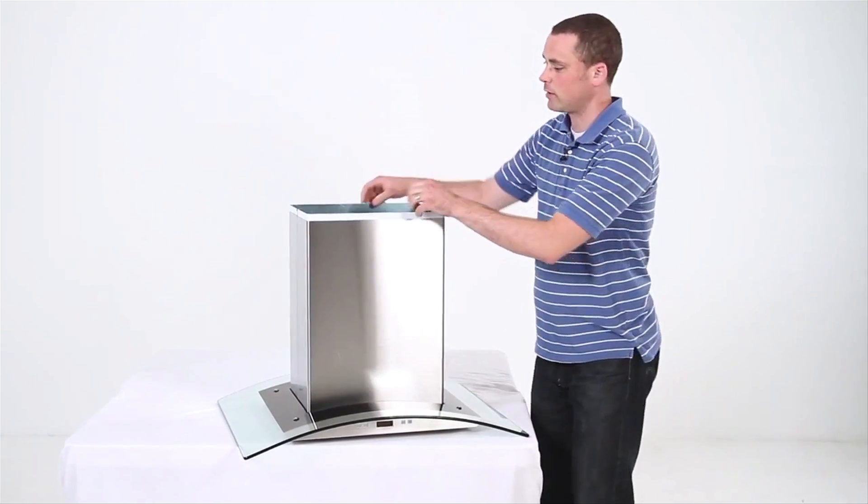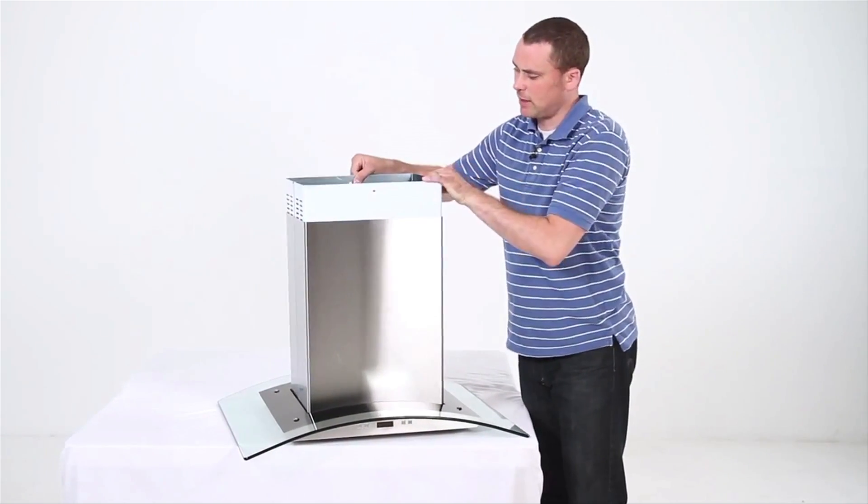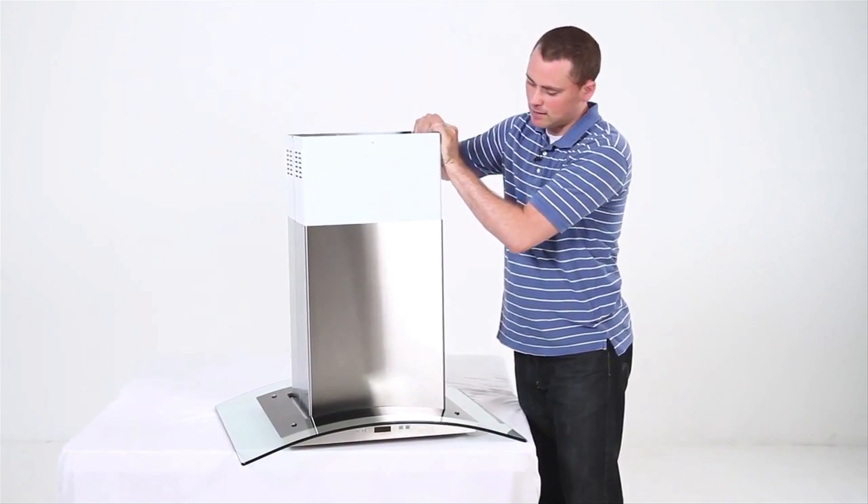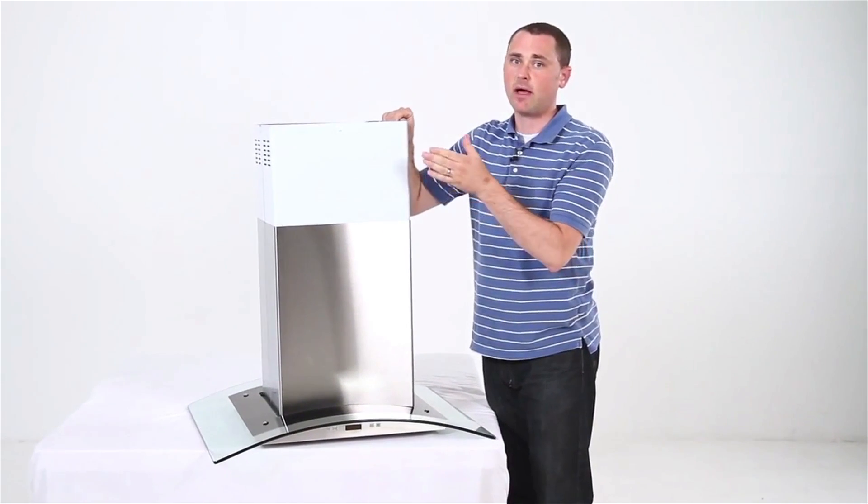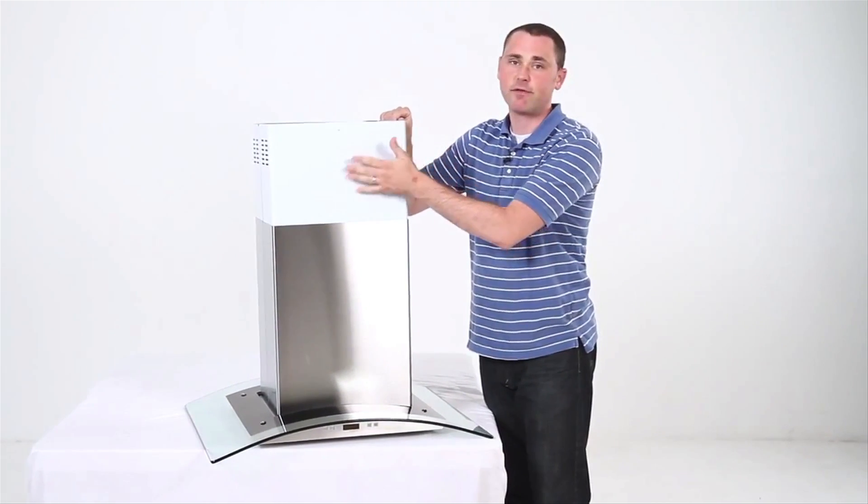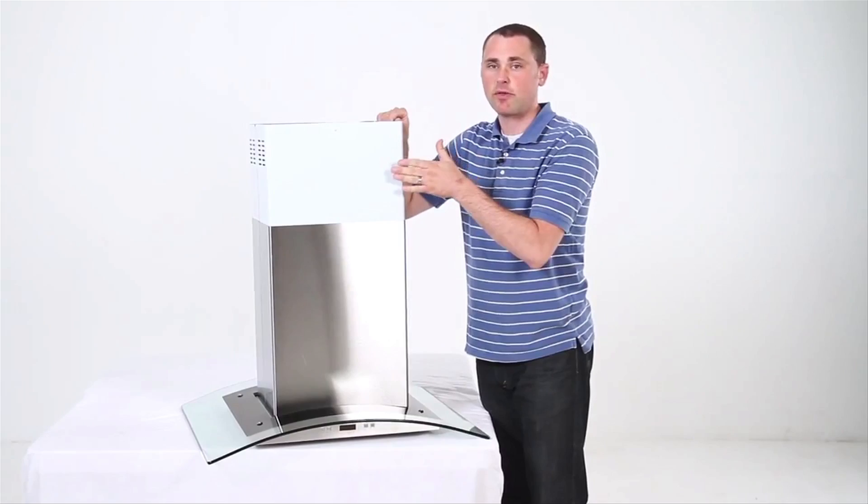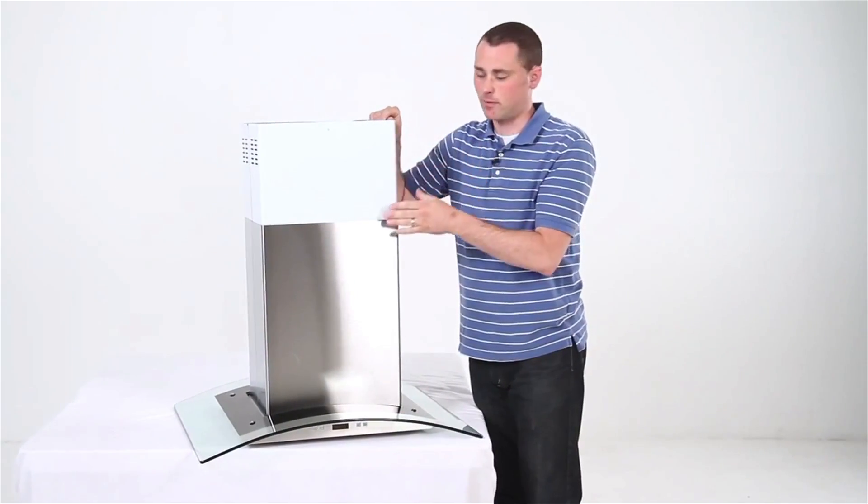And what I've done here is you'll notice that this is white, but the one on the bottom is stainless steel. The reason I did that is to show you that it comes with a protective film, so you don't think that you got a white range hood when it comes to you.